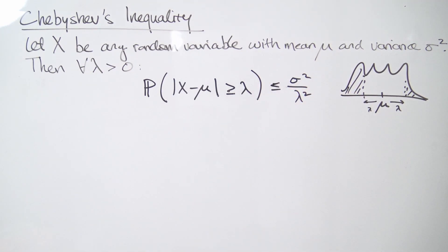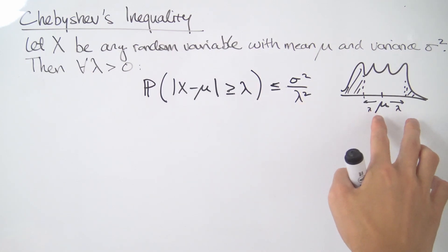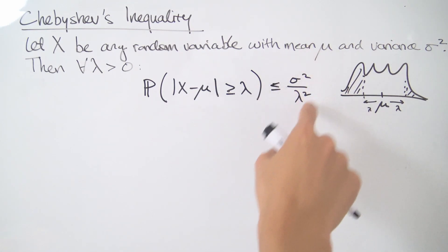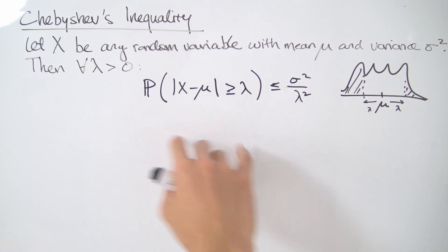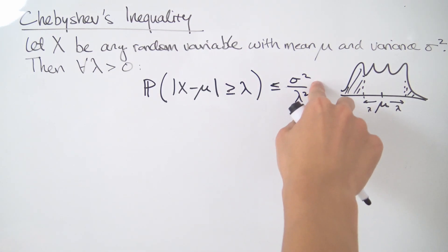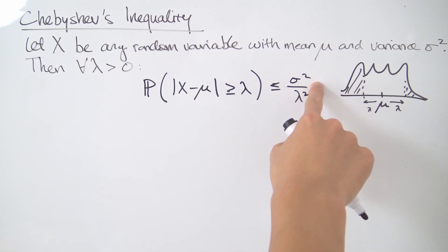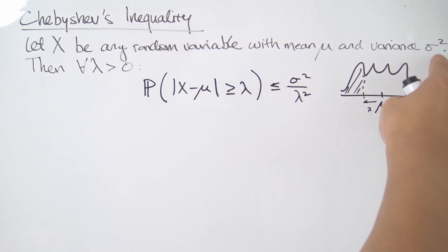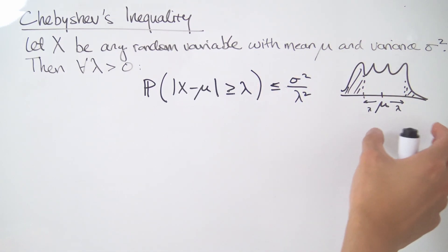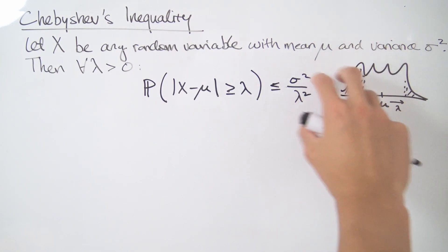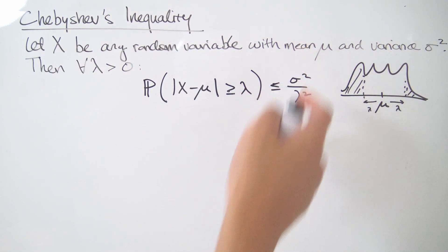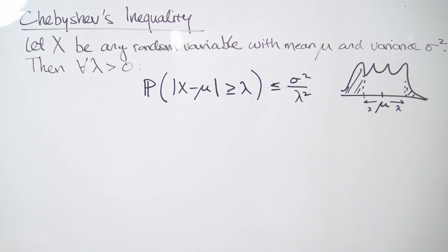If you move out to the left and to the right by lambda units, then the probability of finding yourself in the tail end is less than or equal to sigma squared over lambda squared. This makes perfect sense because lambda is in the denominator — the further you move outward from the mean, the larger lambda grows and the smaller this upper bound becomes. And sigma squared on the numerator makes sense too: if your variance is greater, you have a larger spread of probability, which increases the tail probabilities.